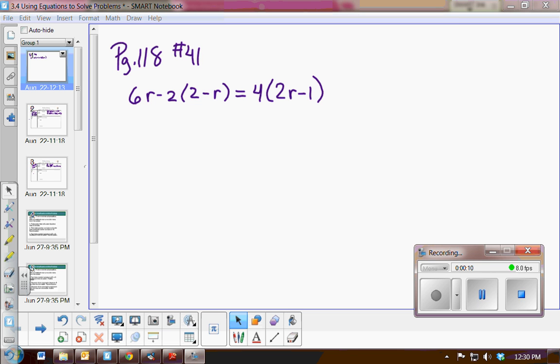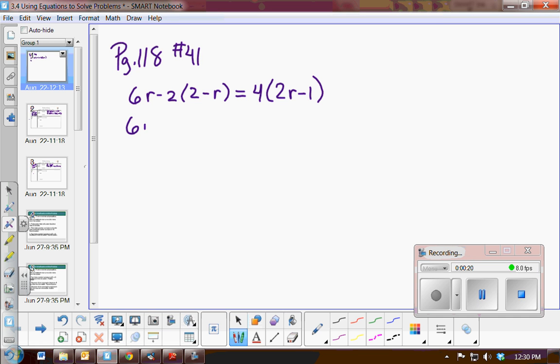Let's look at problem 41 on page 118. I need to solve for r. First, I'm going to simplify each side of the equation using the distributive property. So 6r minus 4 plus 2r equals 8r minus 4.